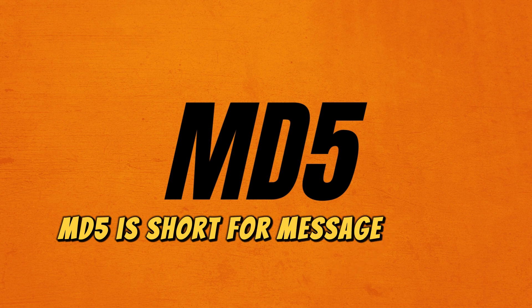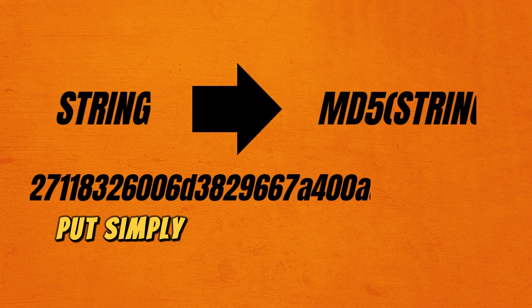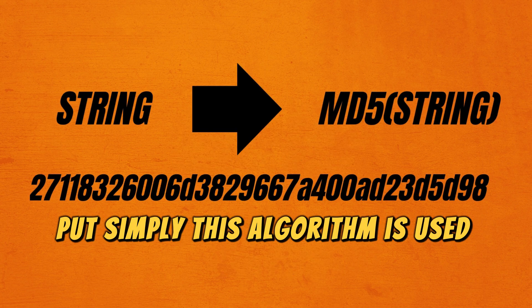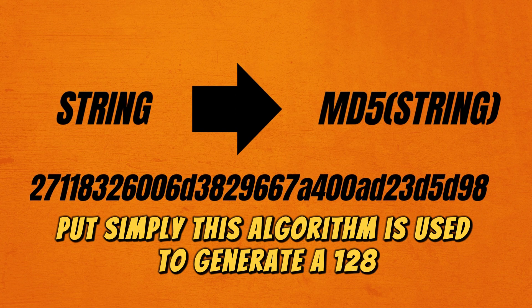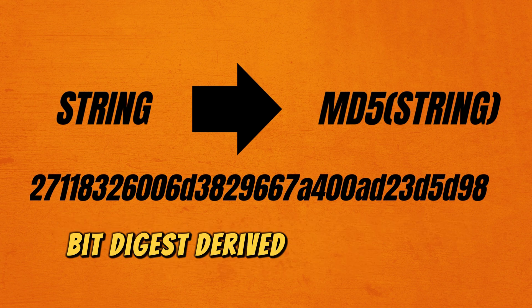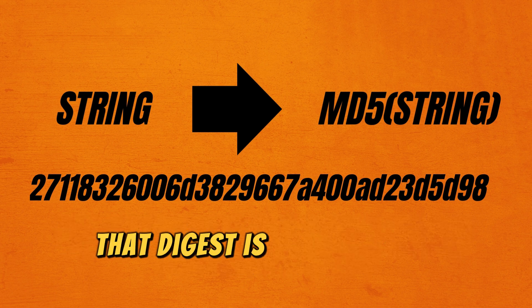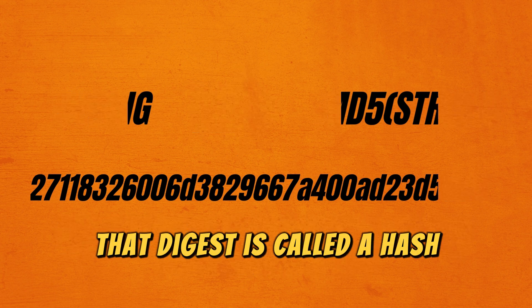MD5 is short for Message Digest method 5. This algorithm is used to generate a 128-bit digest derived from a string. That digest is called a hash.